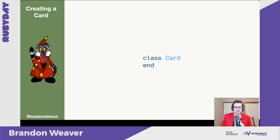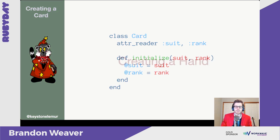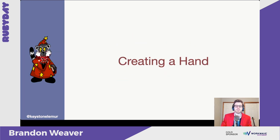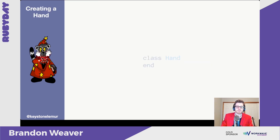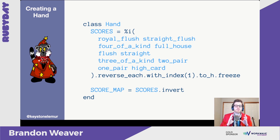Next we're actually going to want to make a card. A card is a combination of a suit like spades and a rank like ace. Then let's take a look at creating a hand, which is a collection of many cards. To start out, let's look at defining some constants for our hand class. We want to know what the order of types of hands are and what their scores are — a royal flush is the highest and a high card is the lowest.